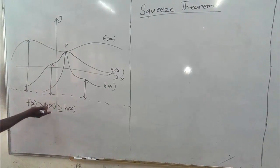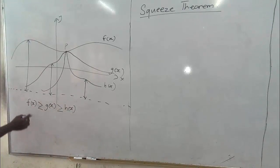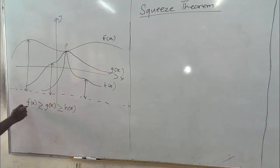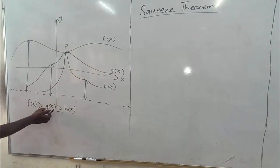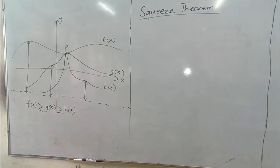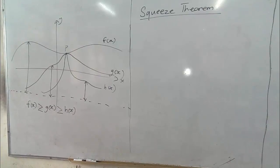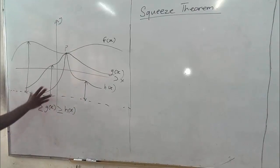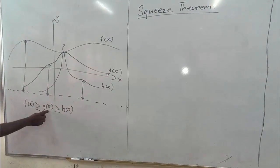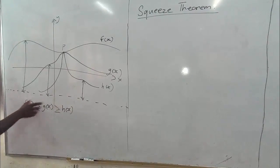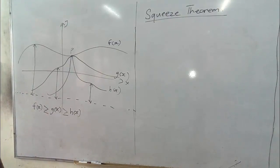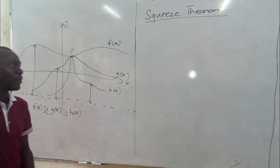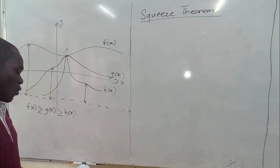So g of x finds itself in between f of x and h of x. If we have knowledge about how to find the limit of f of x and how to find the limit of h of x, but we don't know how to find the limit of g of x, we can squeeze the limit of g of x out of these two bounding functions for which we can find the limits. This is just a graphical representation of what the Squeeze Theorem talks about.